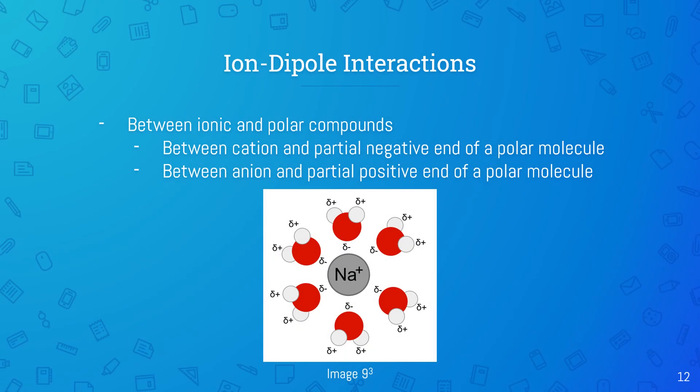Another type of intermolecular force is ion-dipole, which occurs between an ionic and a polar compound. There are two attractive forces in ion-dipole: one between a cation and a partial negative end of a molecule, which is shown in image 9, and two, between an anion and the partial positive end of a polar molecule.